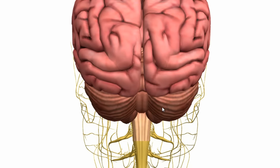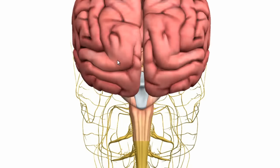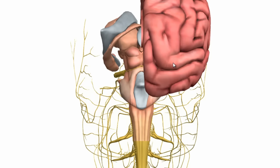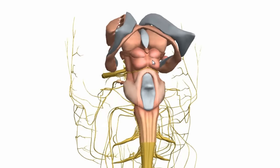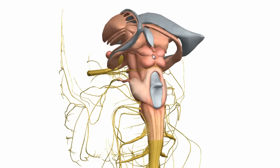If I remove the cerebellum and the hemispheres, we can see the midbrain here — you can identify it by the colliculi. This is the dorsal surface of the brainstem.